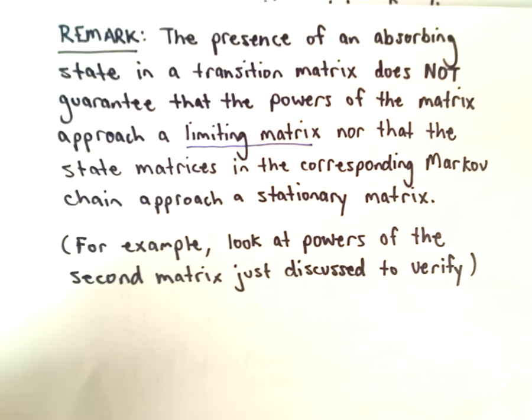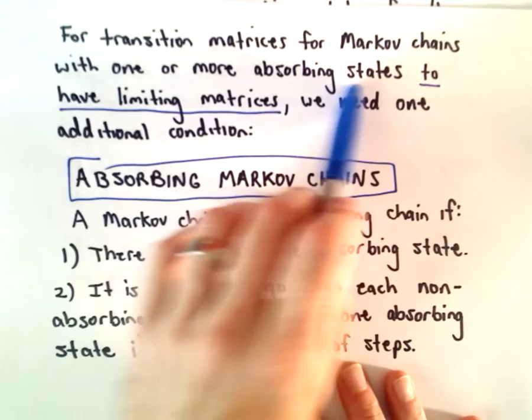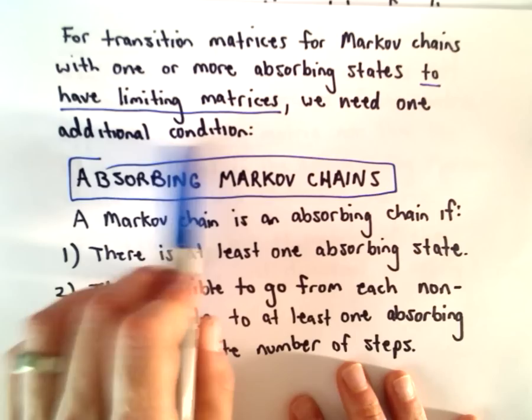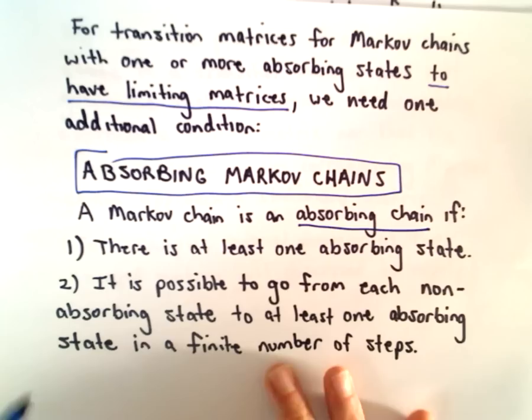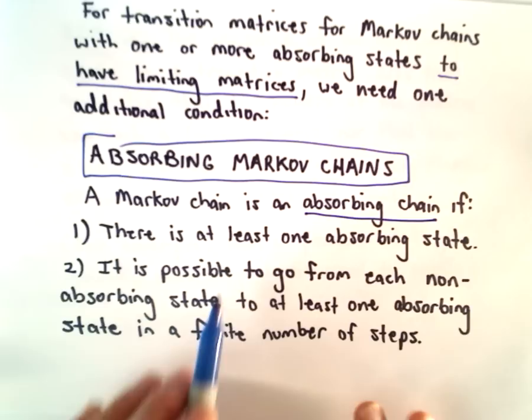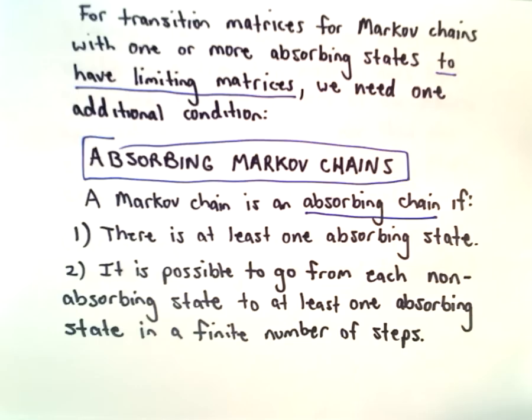When do we have these limiting matrices? We need one extra condition. For transition matrices for Markov chains with one or more absorbing states to have limiting matrices, we need that extra condition — and this gives us what's known as an absorbing Markov chain. We say a Markov chain is an absorbing chain if there's at least one absorbing state, and it has to be possible to go from each non-absorbing state to at least one absorbing state in a finite number of steps.